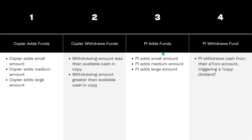Then the third situation is when the PI adds money but you don't match it, or you may choose not to match it. And again we'll have a look at what happens if they add a small, medium or large amount. And the fourth scenario is the PI taking money out of their account, which triggers something called a copy dividend. So we'll look at the old system and the new system and see what the changes are, and try to determine whether the new system is better, and what does this mean for copiers.